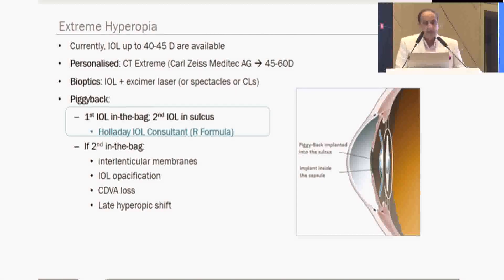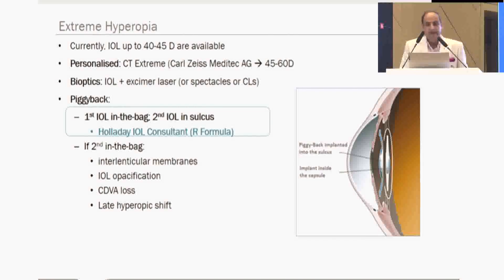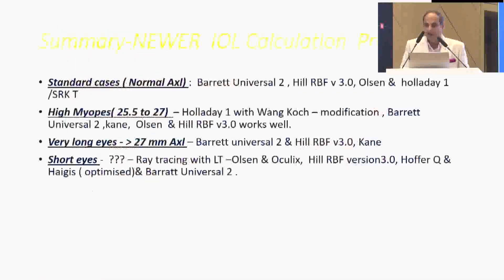For extreme hyperopic patients you may need to customize the IOL or do a piggyback IOL. You might also do a flap and attempt an adjustment, but bioptics with hyperopic correction is always very difficult. There is a formula for piggyback IOL cases — first IOL in the bag, second in the sulcus is the norm. The Holladay IOL constant R formula works very well here; many times this is also done by the suppliers. Potential complications include interlenticular membranes, phacoemulsification opacification, and CDVA loss.